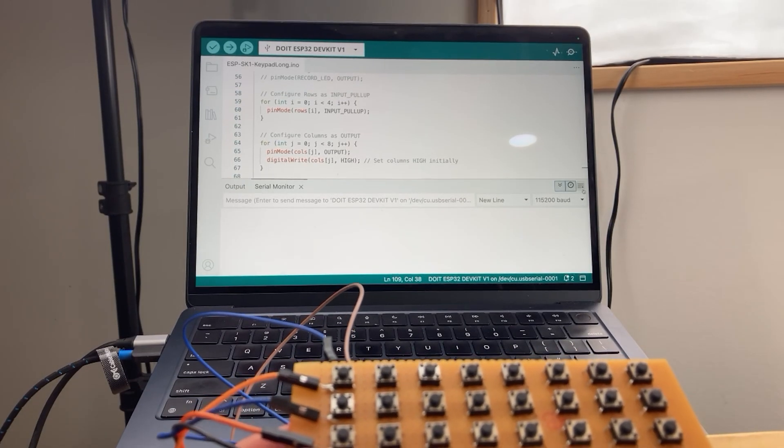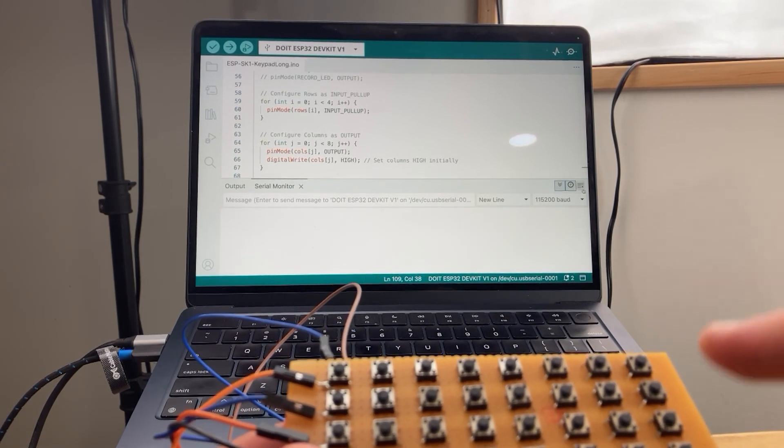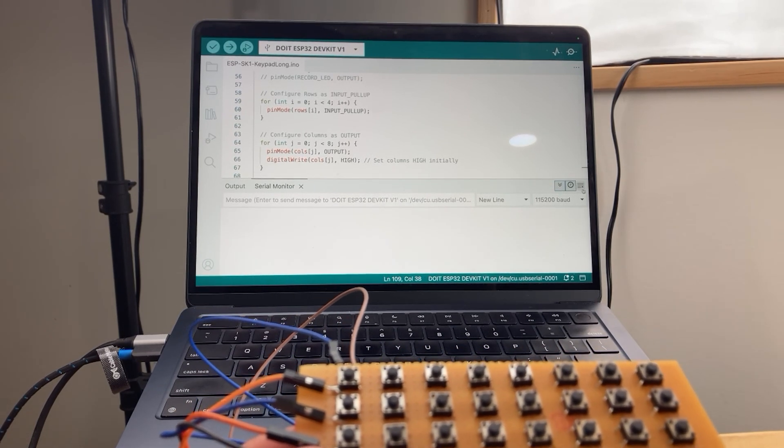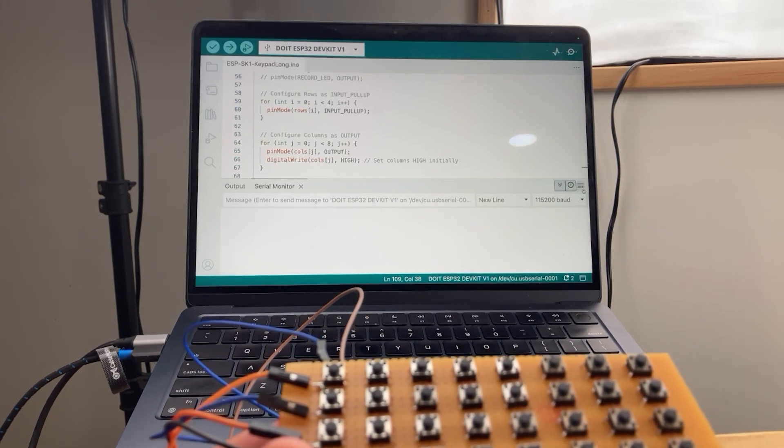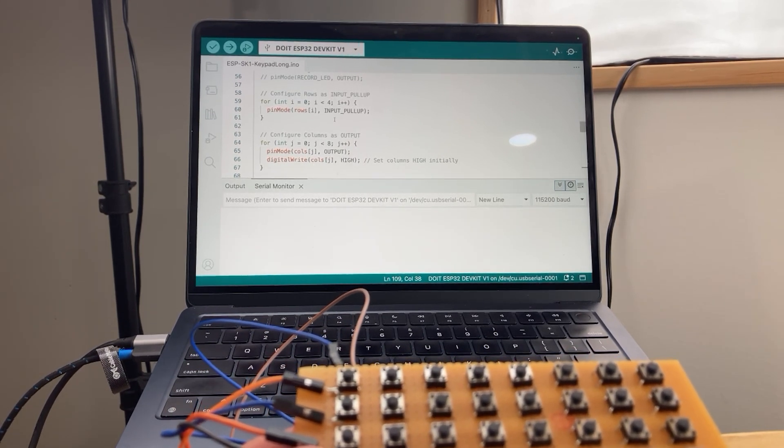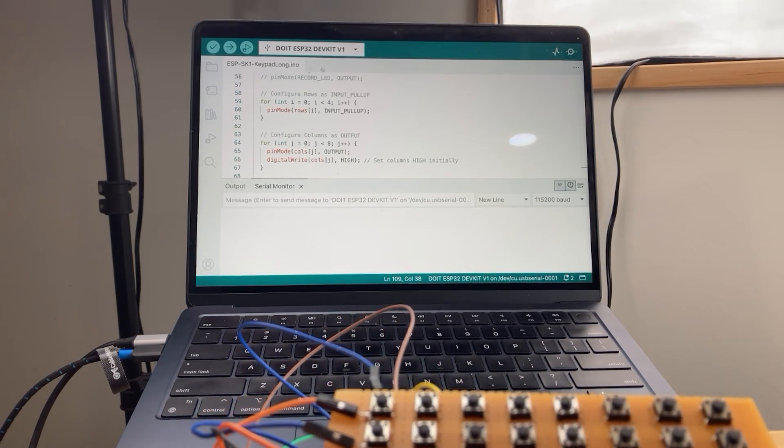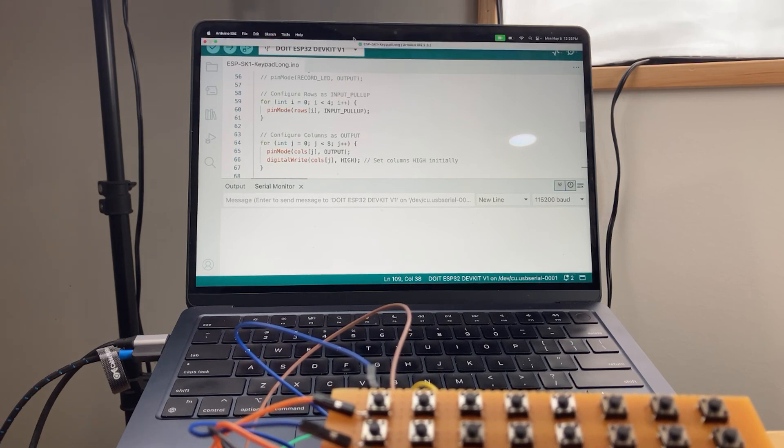Please forgive the crudeness of my setup here. I'm trying to get it so that you can see that I'm pressing the button and we're getting feedback in the serial monitor at the same time, and I'm only working with one camera here. I've got the ESP32 here hooked up to my computer with a USB-C cable, and let's just upload the sketch to the ESP32.